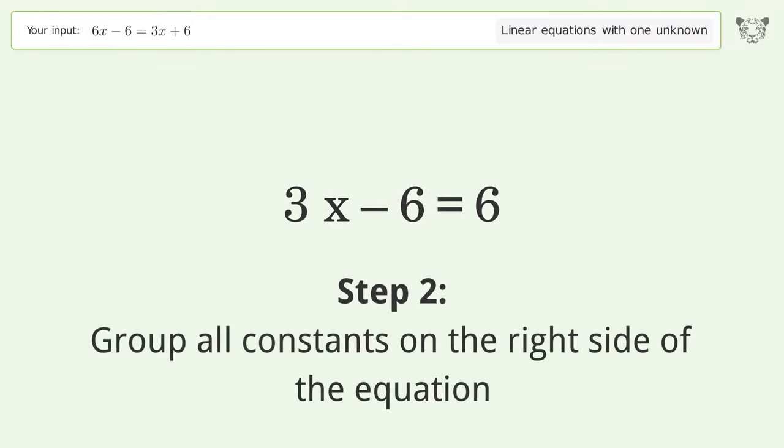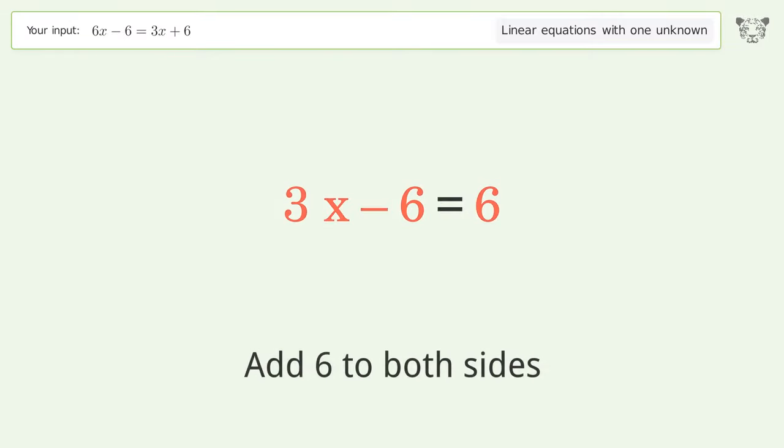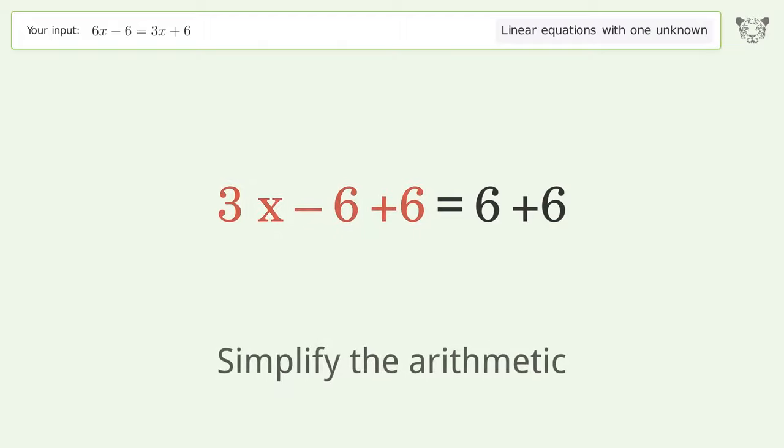Group all constants on the right side of the equation. Add 6 to both sides. Simplify the arithmetic.